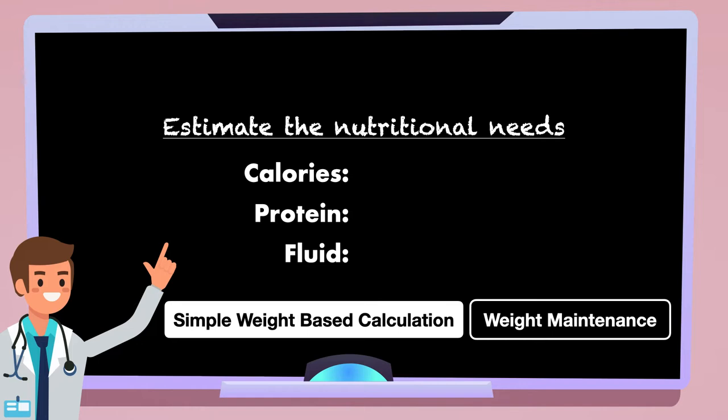For calories, we'll aim for a range of 25 to 30 calories per kilogram. For protein, we'll aim for 1.2 to 1.5 grams per kilogram. And for fluid, we'll match the number of milliliters provided to total calories. In other words, one milliliter per calorie.